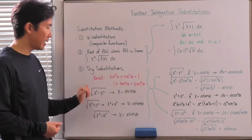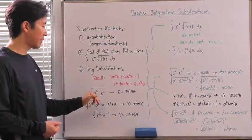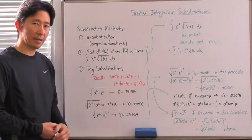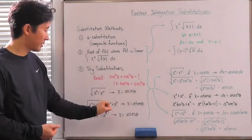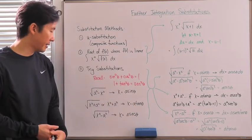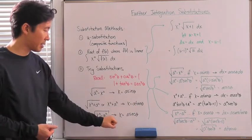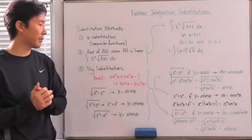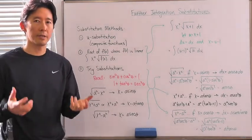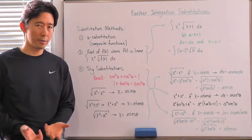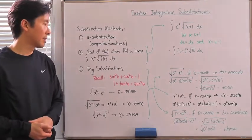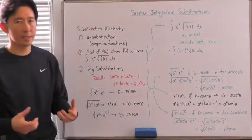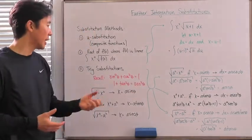If in your integral you have the radical of a² minus x², you let x equal a sinθ. If you have the radical of x² plus a², you let x equal a tanθ. If you have the radical of x² minus a², you let x equal a secθ. We saw a bit of this when we derived the integral that produces inverse trig functions.